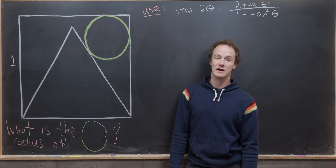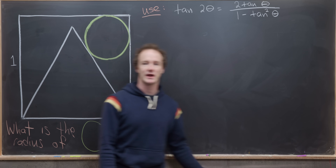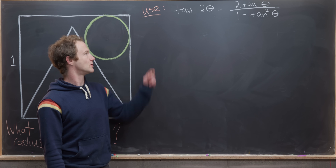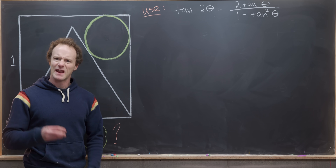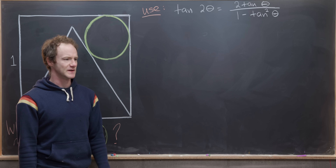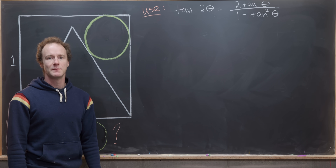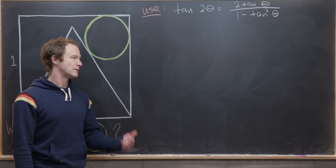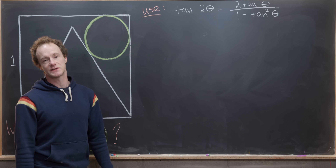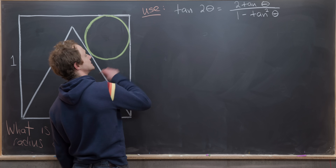We're going to be using some trigonometric identities, and in fact we're going to need the double angle formula for tangent. There are a couple of nice geometric proofs for this, but I want to show a derivation that uses complex numbers before we jump into the solution.